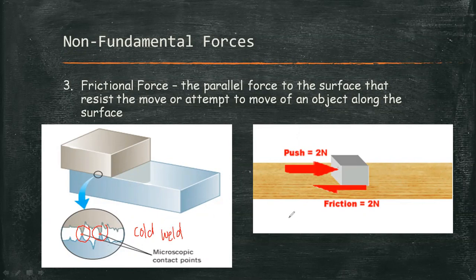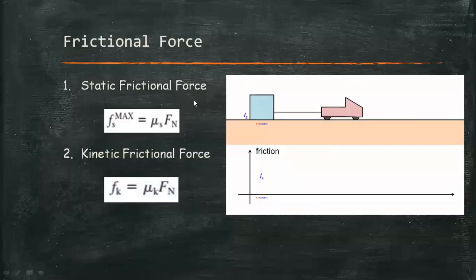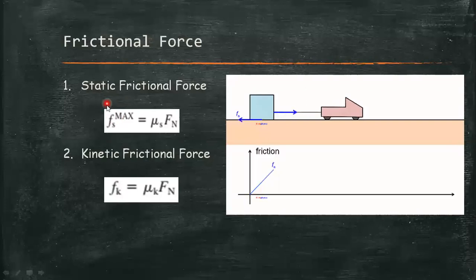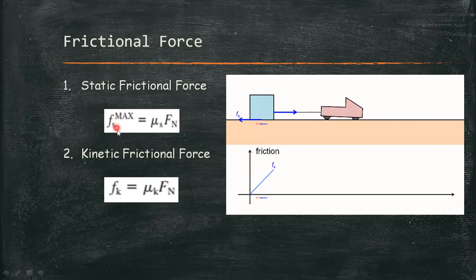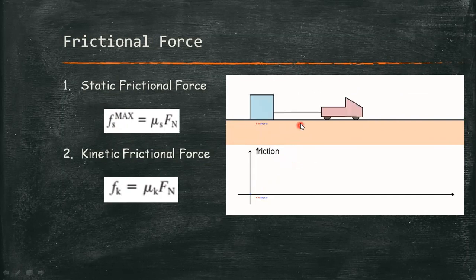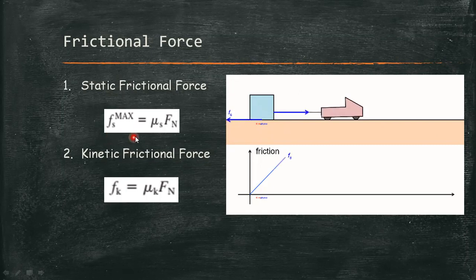There are two types of frictional force: static and kinetic. The magnitude Fs of the static frictional force can have any value from zero up to a maximum value of Fs_max, as seen in the graph. Fs is less than or equal to Fs_max, where the equality holds only when Fs attains its maximum. Fs_max equals the coefficient of static friction times the normal force. As the applied force on the box increases, the static frictional force also increases up to its maximum value.